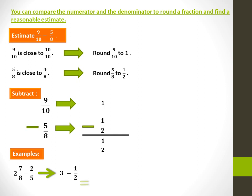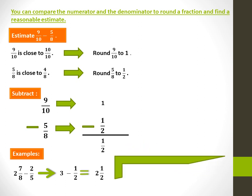Let's round 2 7 over 8 minus 2 over 5. 7 over 8 is close to 8 over 8, which is equal to 1, and 1 and 2 is equal to 3, so 2 7 over 8 is rounded to 3. And 2 over 5 is rounded to half. 3 minus half is equal to 2 and a half.